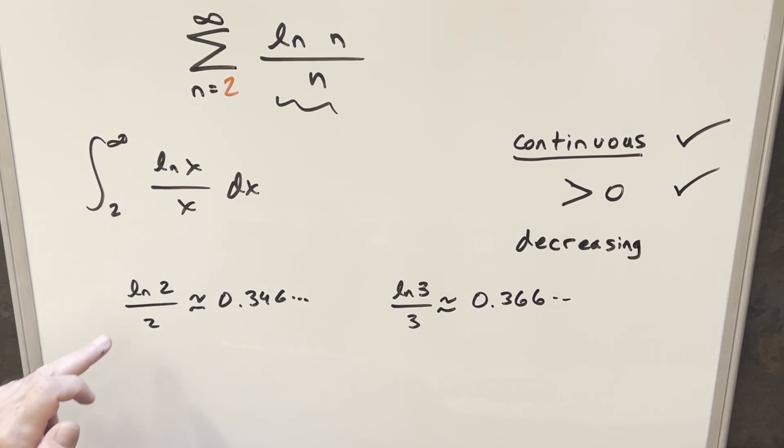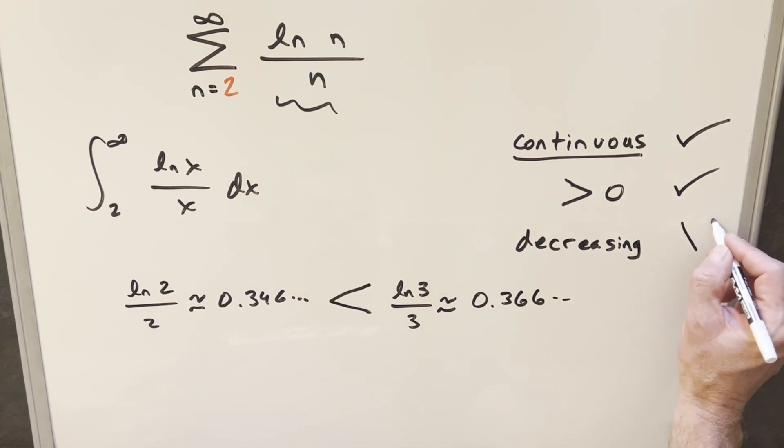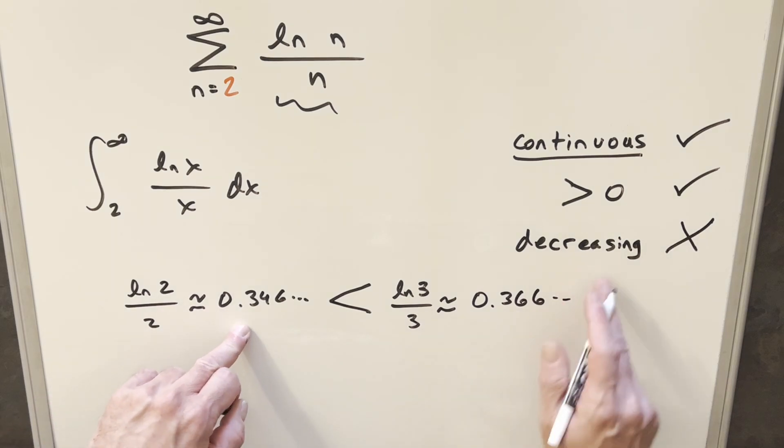And the problem is between our n equals 2 value and our n equals 3 value, we're not decreasing. We're actually increasing right here. It's going to be fine after that. But for what we have right now, technically, it's not decreasing.